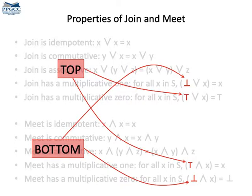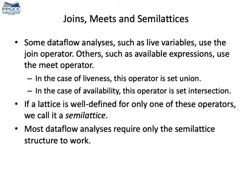These elements have names. We call the multiplicative 0 of join the top element. Top is also the multiplicative 1 of meet. It's the largest element in the lattice. And we call the multiplicative 1 of join the bottom element. Bottom is also the multiplicative 0 of meet. It's the least element of the lattice.